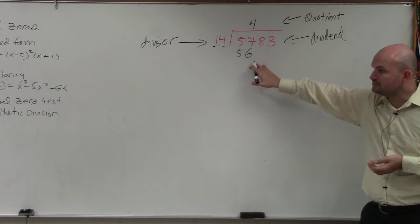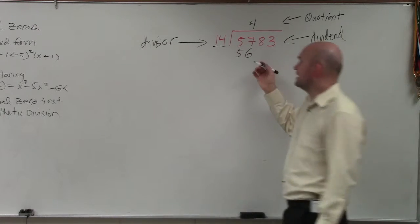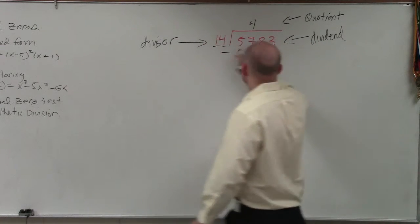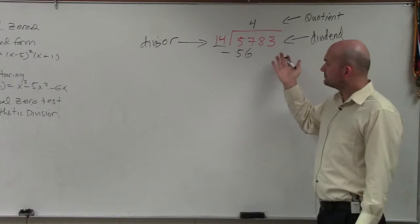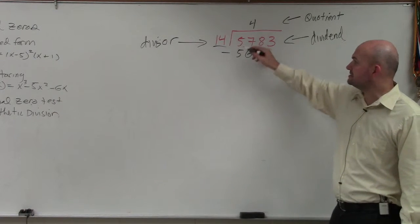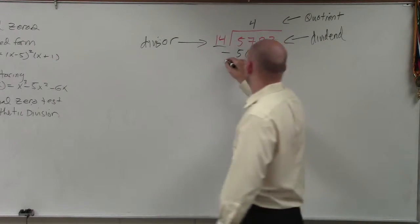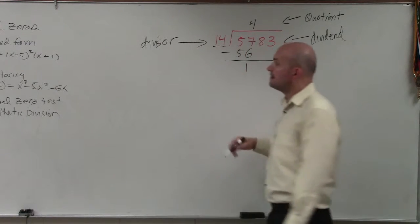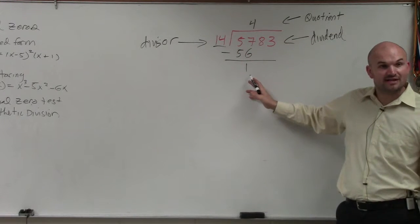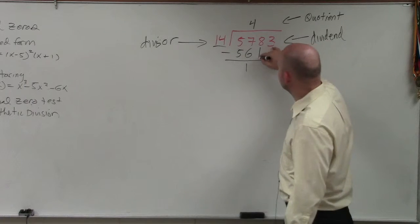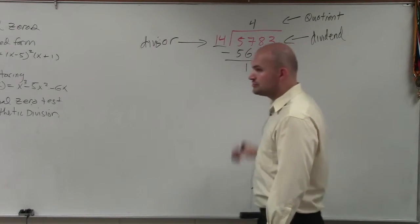Then I write that number below. I'm going to subtract these two numbers. When I do 57 minus 56, that leaves me with 1. 14 does not divide into 1, so I bring down the next place value, which is 8.